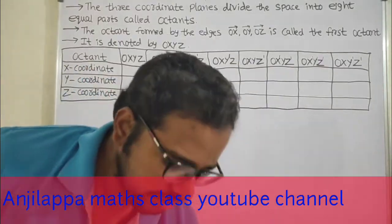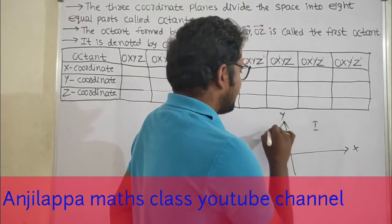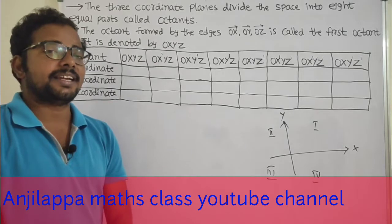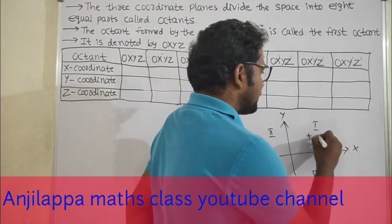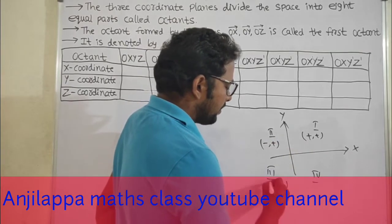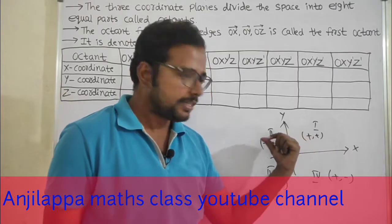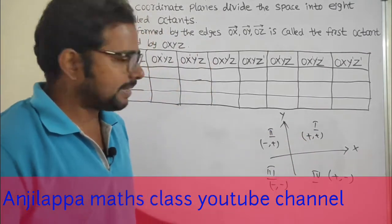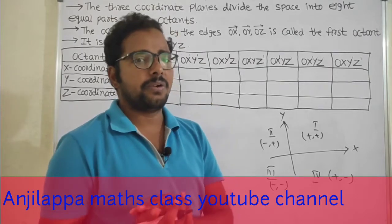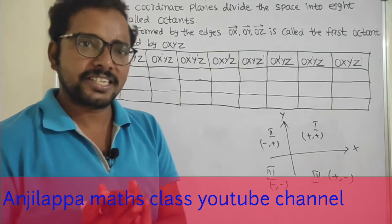We already know from 2-dimensional geometry that the plane is divided into four quadrants by the x-axis and y-axis. In the first quadrant, both x and y coordinates are positive. In the second quadrant, x is negative and y is positive. In the third quadrant, both are negative. In the fourth quadrant, x is positive and y is negative. Now we will see the signs of coordinates in the octants.